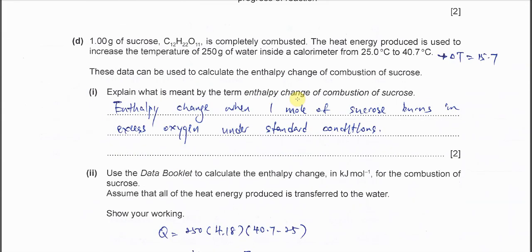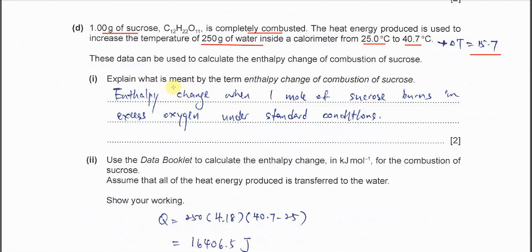For part D, one gram of sucrose is completely combusted and the heat energy produced is used to increase the temperature of 250 grams of water inside a calorimeter. The temperature increase is 15.7. Part one: explain what is meant by enthalpy change of combustion of sucrose.